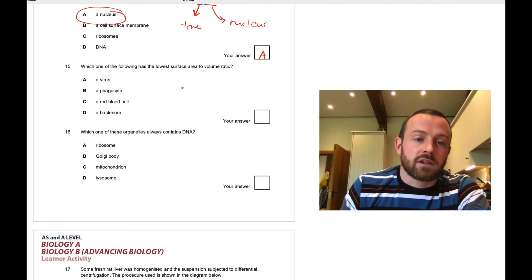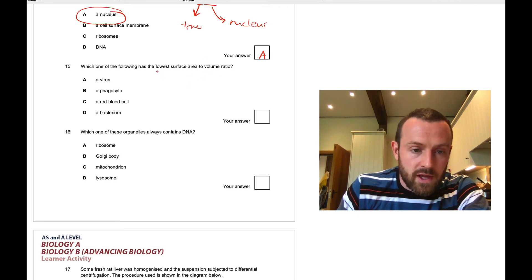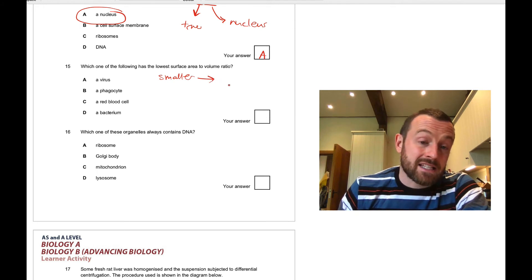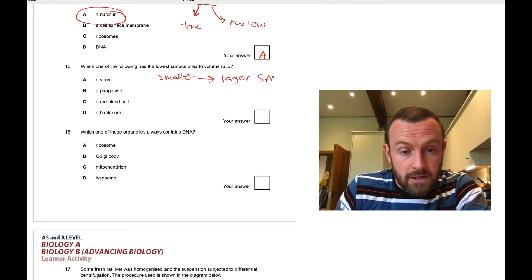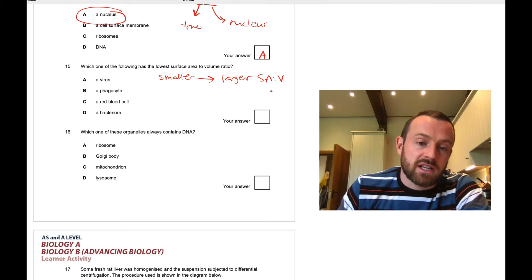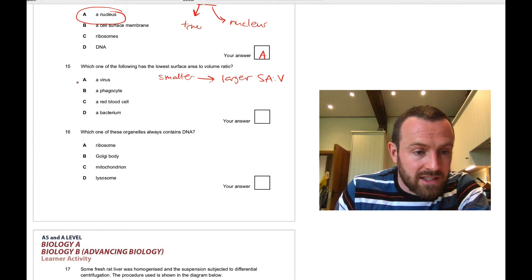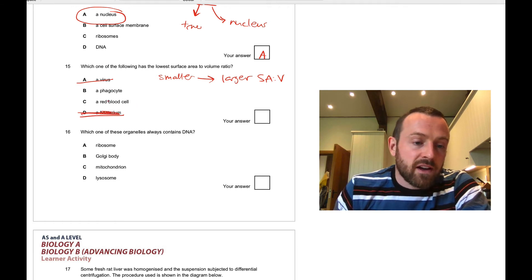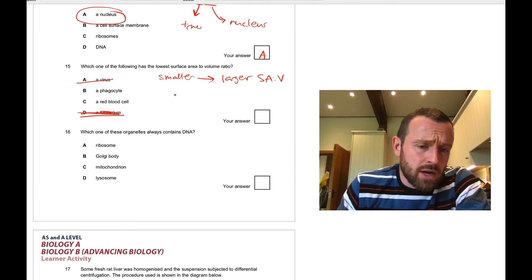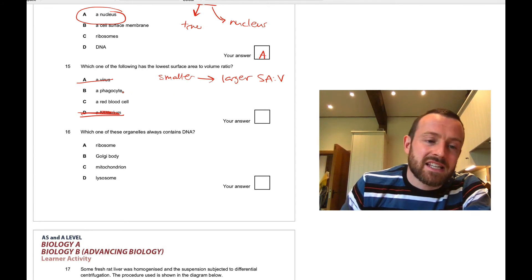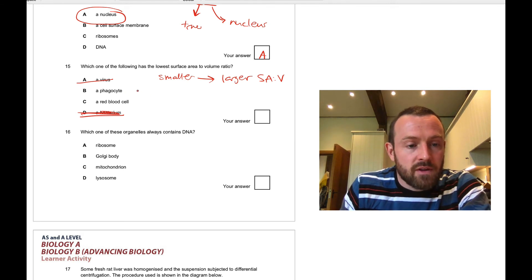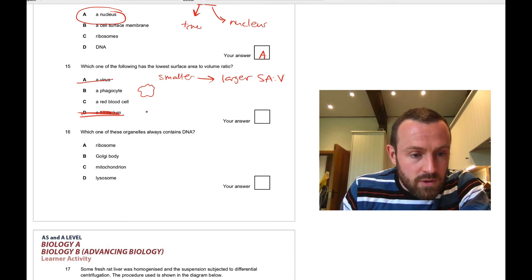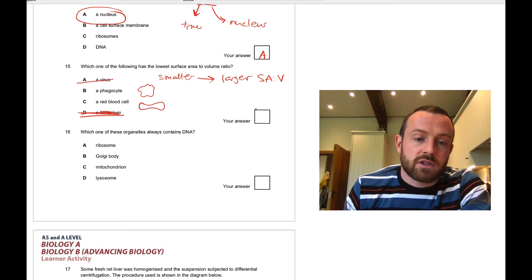Question fifteen: which of the following has the lowest surface area to volume ratio? I like this one. You need to remember that the smaller the object, it has the larger surface area to volume ratio. So small objects have large surface area to volume ratio. So immediately let's cross out the smallest thing—a bacteria is the smallest thing. The next smallest thing is a bacterium, so let's cross that out. What about a phagocyte versus a red blood cell? They're both animal cells, both blood cells. A phagocyte is a little bit bigger for a start. But if you didn't know that, you may remember that a phagocyte is a roughly blobby shape, kind of circular, whereas a red blood cell is specifically adapted to be biconcave, giving it a high surface area to volume ratio. The answer is therefore B.